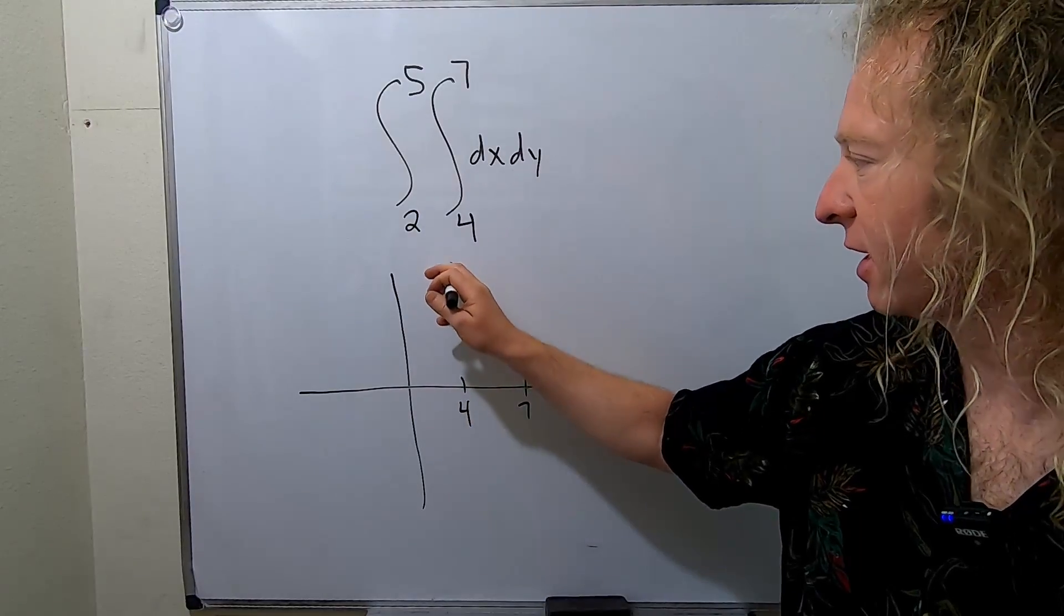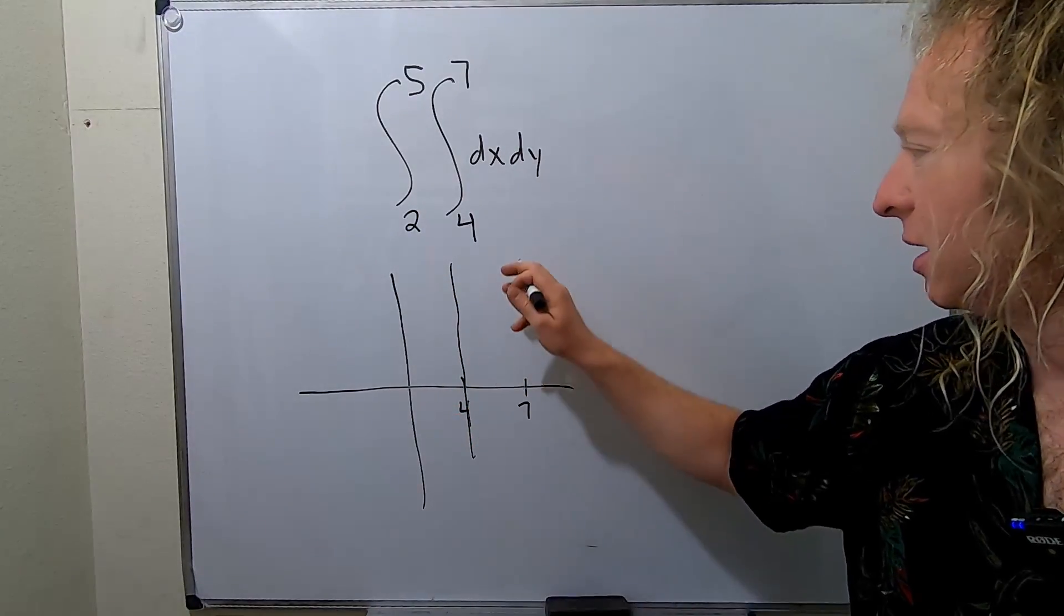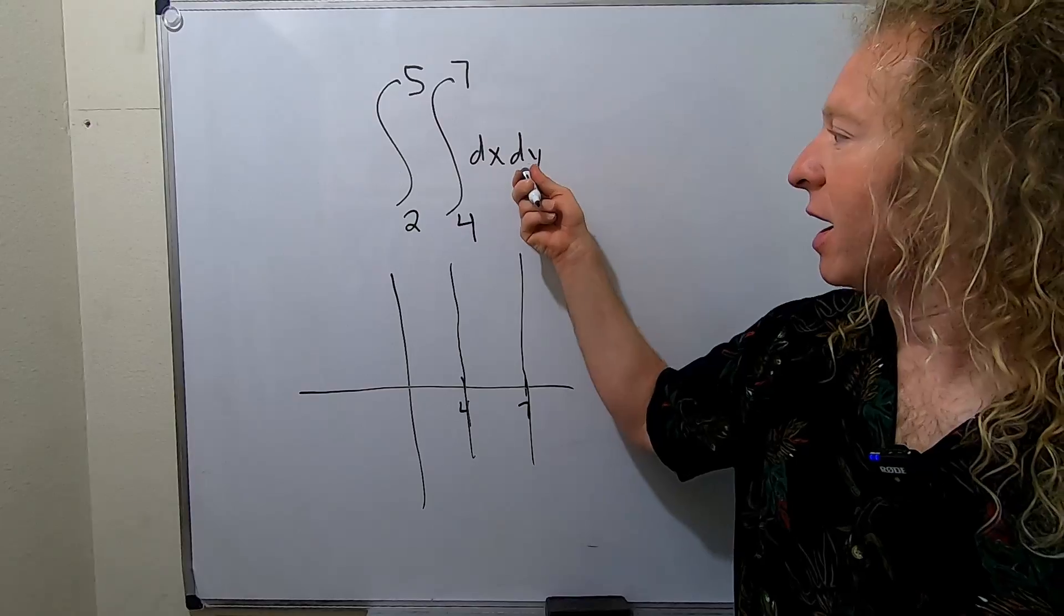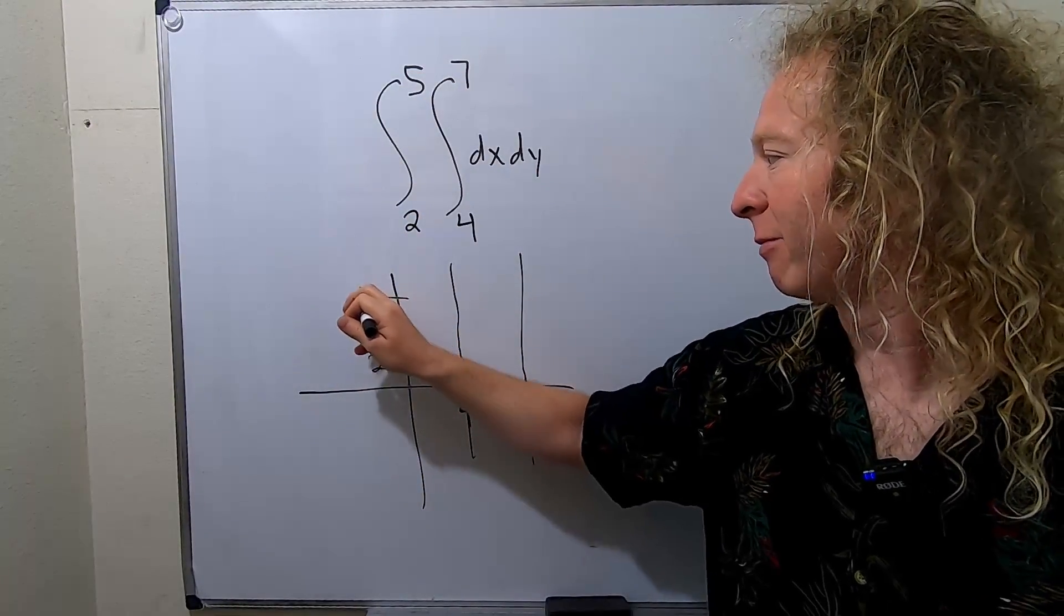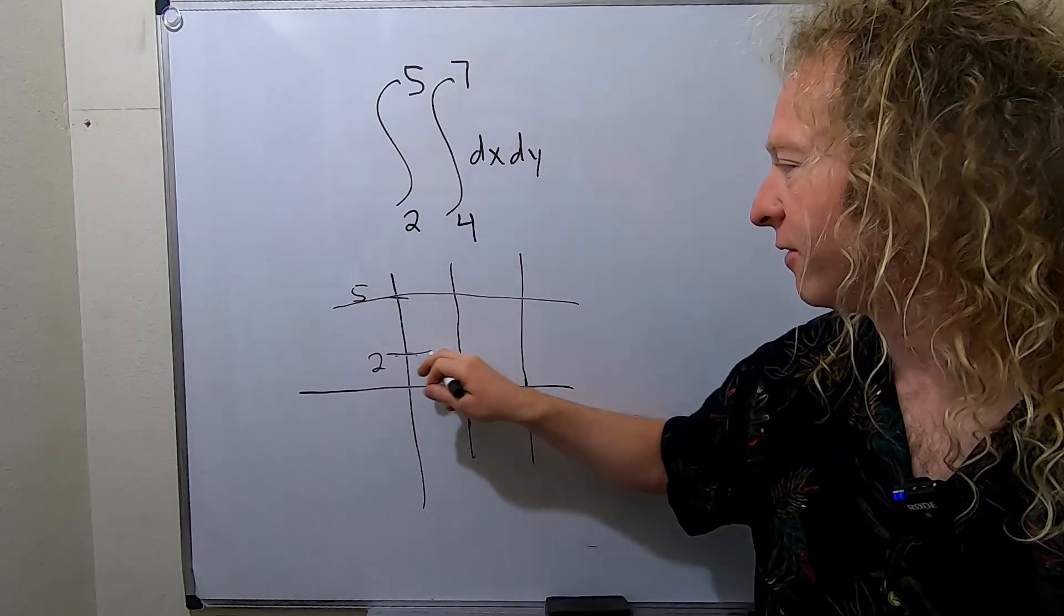You could write vertical lines. In fact I will but I'll end up erasing them in a minute. But there they are. And now we're doing y. So y goes from 2 to 5. My picture is not drawn to scale. So from 2 to 5.